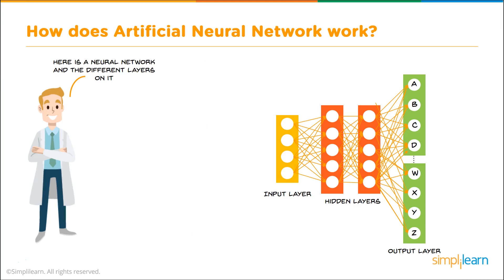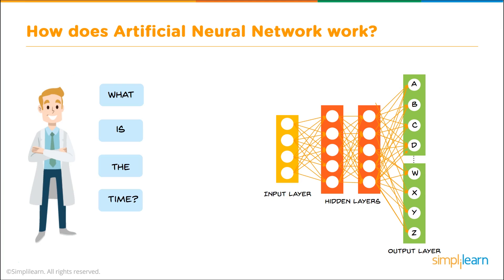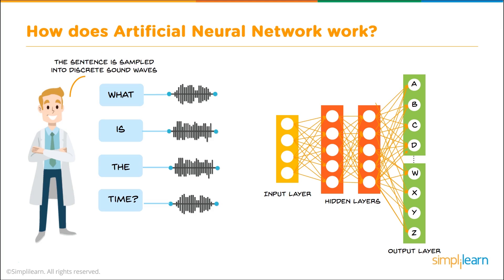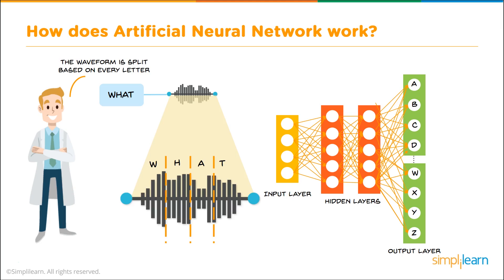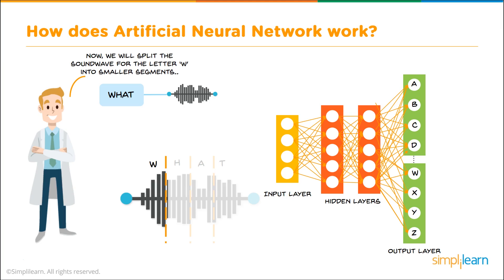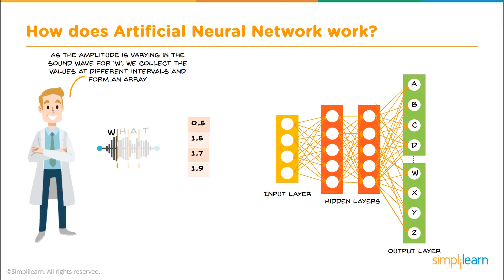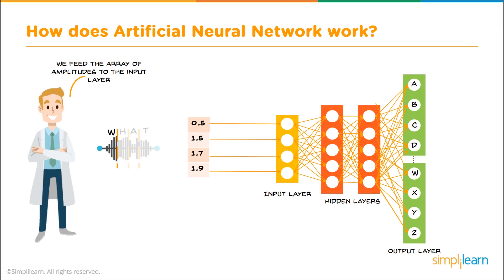Here is a neural network with its different layers: the input layer, hidden layers, and the output layer. The sentence to be recognized is 'What is the time?' — each word comes in as a pattern of sound. Consider the word 'what' — W-H-A-T — each letter has a different pattern in the sound bar. We split the sound wave for the letter W into smaller segments and analyze just W. As the amplitude varies in the sound wave for W, we collect values at different intervals and form an array — for example, 0.5, 1.5, 1.7, 1.9 — and feed that array of amplitudes to the input layer, where each value goes into its own node.